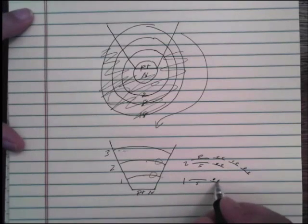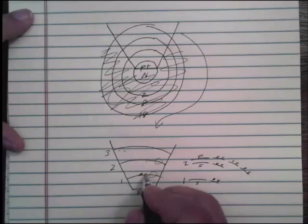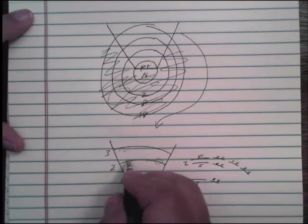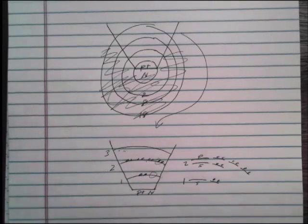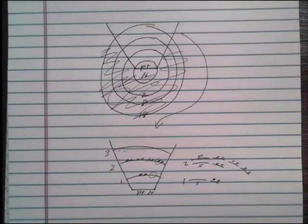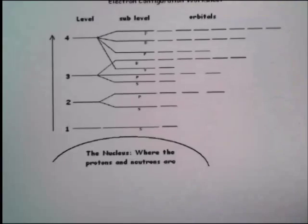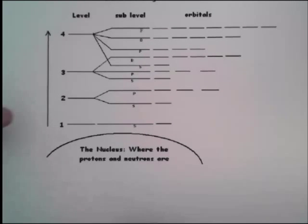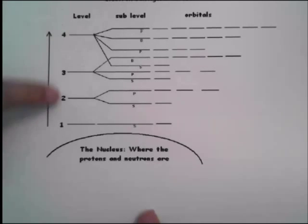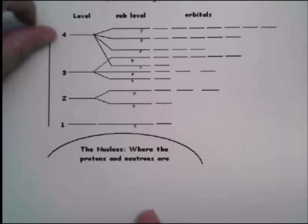So we have a total of two electrons in the first energy level and eight electrons in the second level. Here's a different diagram showing the same concept: levels one, two, three, and four — these are the principal quantum numbers. The first level has one sublevel, the second level has two sublevels (an S and a P sublevel).